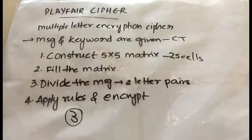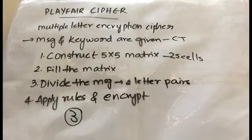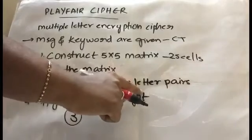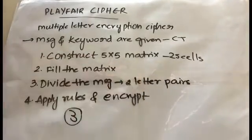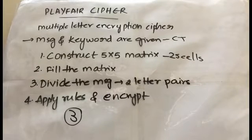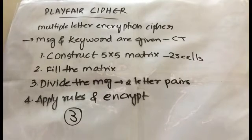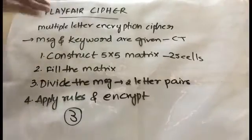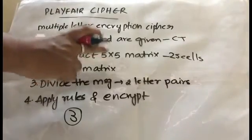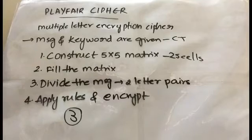There are three encryption rules. Rule one: if both letters of a pair are in the same column, apply the column rule. Rule two: if both letters are in the same row, apply the row rule. Rule three: if both letters are in neither the same row nor the same column, apply the rectangle rule. First we'll construct and fill the matrix, then divide the message, then apply the rules.